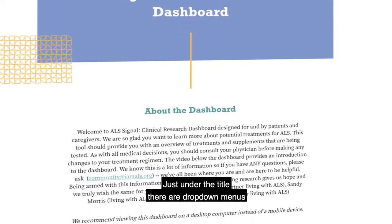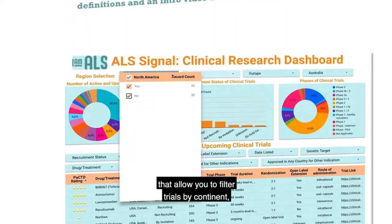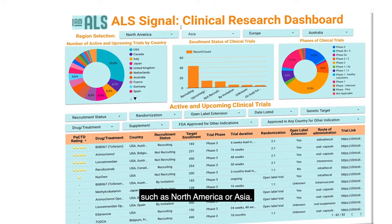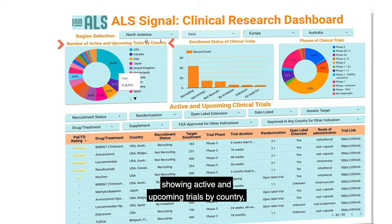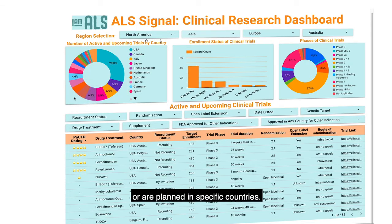Just under the title, there are drop-down menus that allow you to filter trials by continent, such as North America or Asia. If you hover your cursor over the chart showing active and upcoming trials by country, you can see how many clinical trials are taking place or are planned in specific countries.